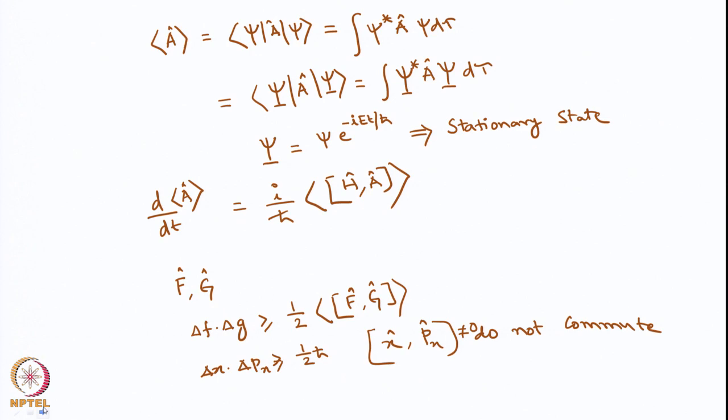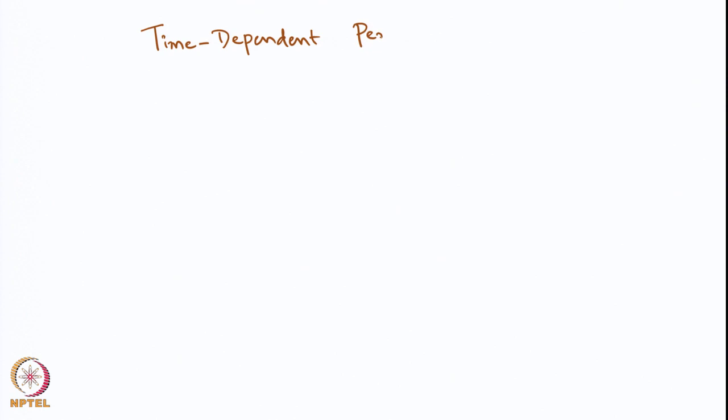Now we know that the time dependence of the average value of A depends on whether that operator commutes with the Hamiltonian or not. We will now go to the second part of our course: time-dependent perturbation theory. Specifically, I will show the time-dependent perturbation theory of two states, because it has some interesting consequences.